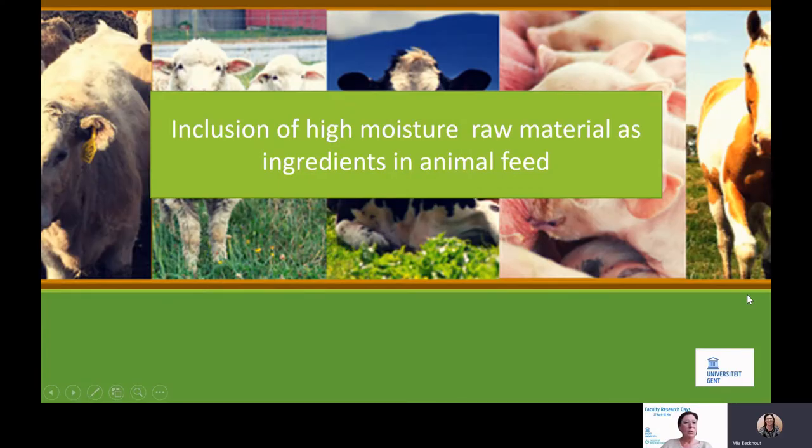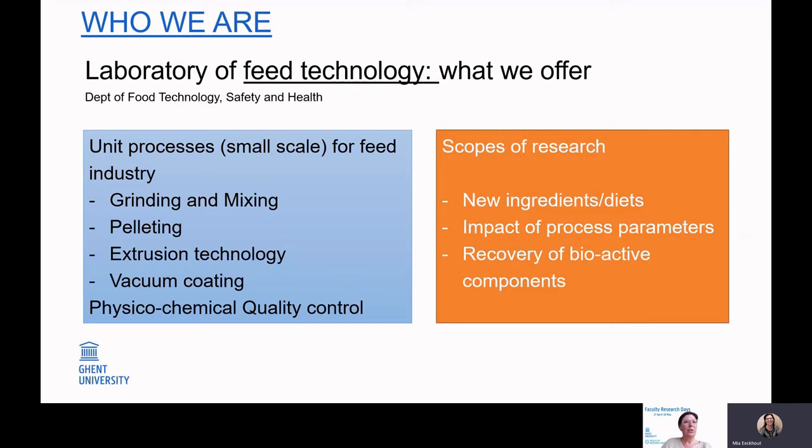And I'll give the floor to Mia. So thank you Reindert for this nice introduction. And welcome to all of you. I'm Mia Ickhoot. I'm head of the laboratory of feed technology. And I will guide you through the second part of this presentation. So let's dive into the inclusion of high moisture raw material as ingredients in animal feed. Let me tell you who we are. I'm from the laboratory of feed technology and we have a lot of things to offer. We are well equipped and we have unit processes on small scale for feed industry as grinding and mixing, pelleting, extrusion technology, vacuum coating, but also a lab well equipped for the physical chemical analysis of products for quality control.